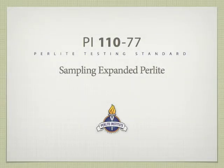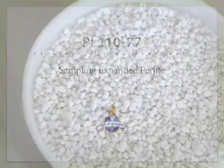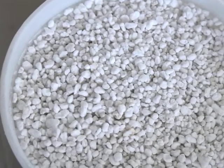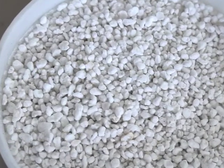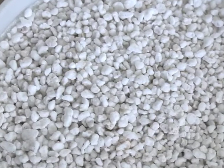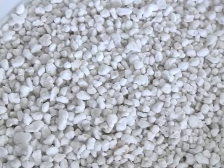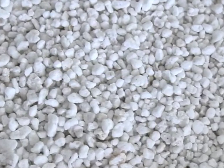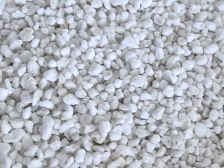When sampling expanded perlite, it is important that the sample be representative of the entire quantity. The object of this procedure is to obtain a relatively large representative sample, which can then be further reduced for actual testing.